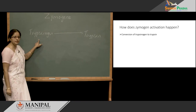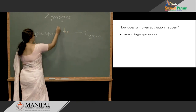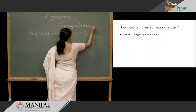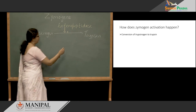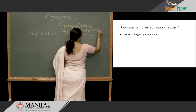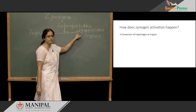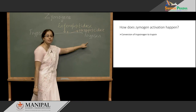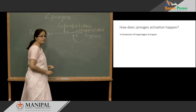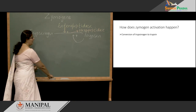Trypsinogen is now in the lumen of the duodenum. It comes across its activator, that is enteropeptidase. During the activation process, there is release of a hexapeptide. A peptide bond in trypsinogen is broken down, releasing a hexapeptide from the N-terminal end. During this process, trypsinogen is converted to trypsin, which is the active form. Now, a few molecules of trypsin that are produced can activate remaining molecules of trypsinogen to trypsin. This process is known as autocatalysis.